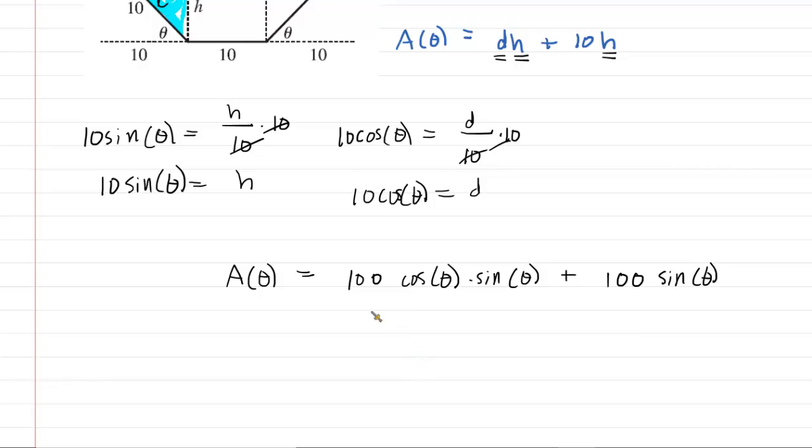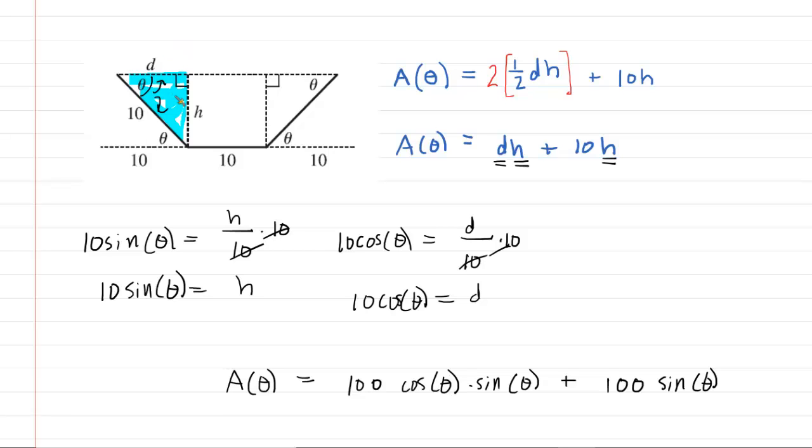What we want to note is that theta is bounded by two different values. If you think about the gutter, the smallest possible value for theta would be 0. You could imagine taking this end of the metallic sheet and bending it all the way down so it sits horizontally flush, and same thing over here. That would make theta equal 0. But you could also take that edge and bend it all the way up so it's oriented vertically. In that case, theta would be 90 degrees. So the upper bound of the angle is 90 degrees. For our area function, theta is bounded by those two values, and that will become important later.